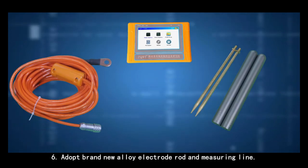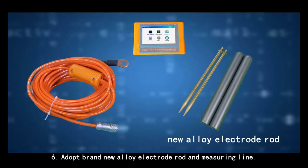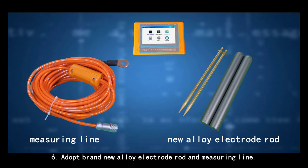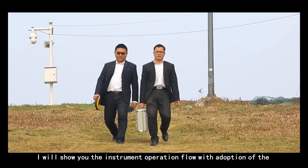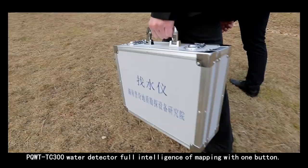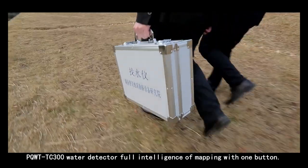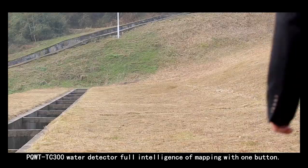Sixth, adopt a brand new alloy electrode rod in the measuring line. I will show you the instrument operation flow with adoption of PQWT-TC300 water detector full intelligence of mapping with one button.